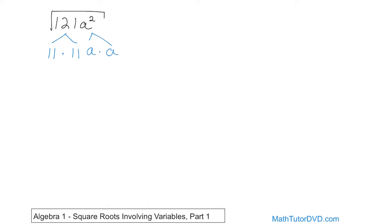Now you look for pairs. You can't break 11 into anything simpler because it's already prime, and you can't break a down further because it's just 1 times a. So you look for pairs: I see a pair of 11s and a pair of a's. When you see a pair, you pull out a single item — pull out a single 11 and a single a. The answer is 11a.